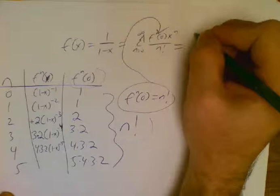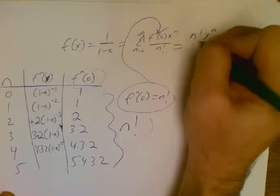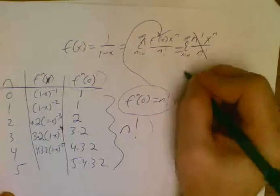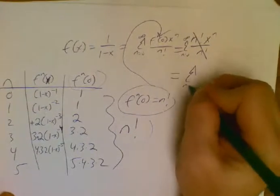Well, isn't that convenient? I have n factorial x to the n over n factorial. And the n factorials cancel, and this is maybe what you remembered from last week.